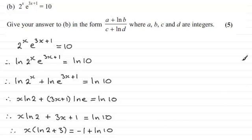So this is starting to take shape now, okay, to what we've got here, because all I've got to do is divide both sides by the natural log of 2 plus 3. So if I do that, we end up with x equaling minus 1 plus the natural log of 10, and all of this is divided by the natural log of 2 plus 3.